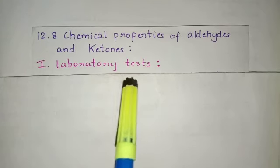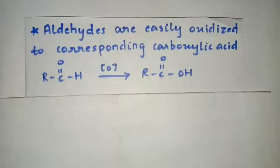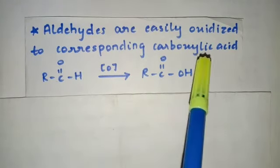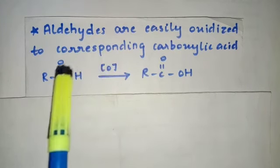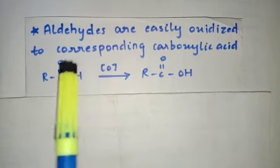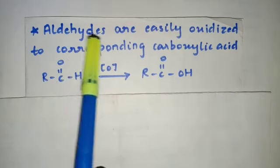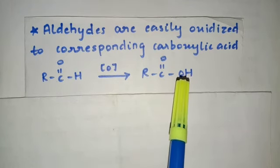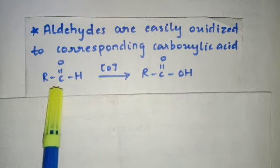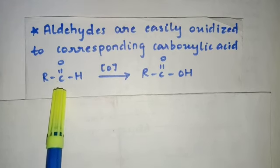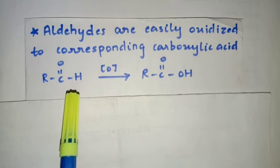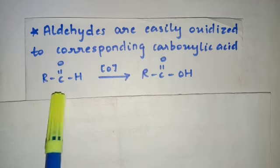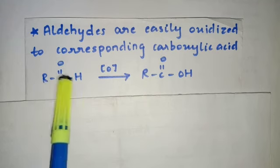Before explaining the reactions, you all should know something. Aldehydes are easily oxidized to the corresponding carboxylic acid. This type of reaction you have already seen in the previous chapter. The key point is that aldehydes can be easily oxidized to the corresponding carboxylic acid. Therefore, your aldehydes act as a reducing agent towards mild oxidizing agents.